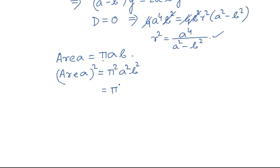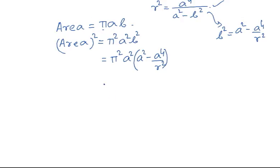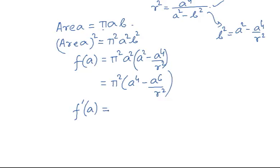We express B² in terms of A using the condition derived earlier. Rearranging R² = A⁴/(A² − B²) gives B² = A² − A⁴/R². Substituting into π²A²B², the area function becomes F(A) = π²(A⁴ − A⁶/R²), treating R as constant.